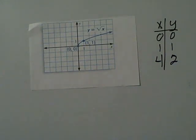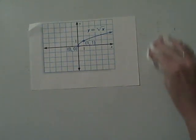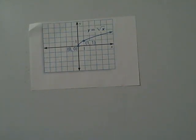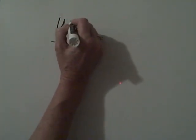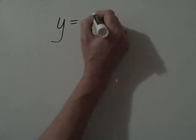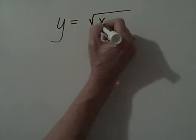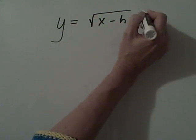Now if you remember correctly when we did absolute value, the graph shifted. The general form for our equation is y equals the square root of x minus h plus k.